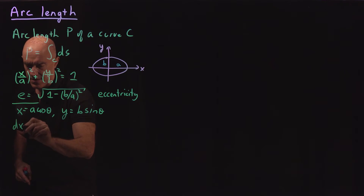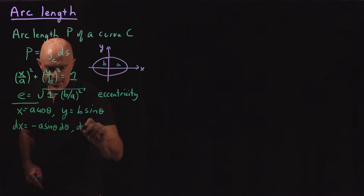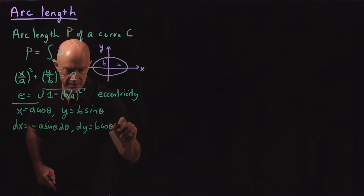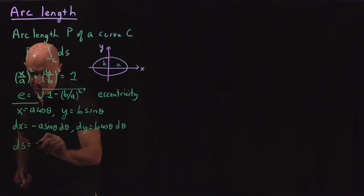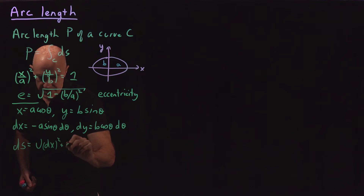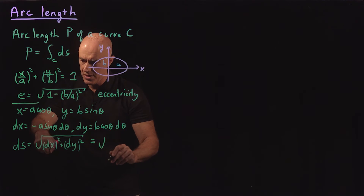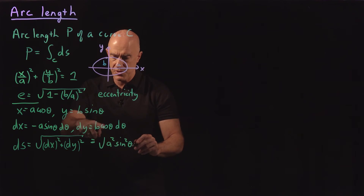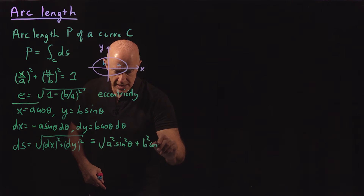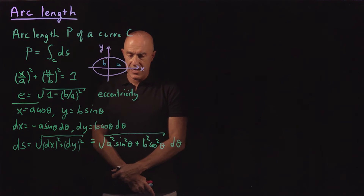What is dx? dx equals minus a sine theta d theta, and dy equals b cosine theta d theta. So our ds is the square root of dx squared plus dy squared, which works out to the square root of a squared sine squared theta plus b squared cosine squared theta, times d theta — so the square root gives us a d theta factor.